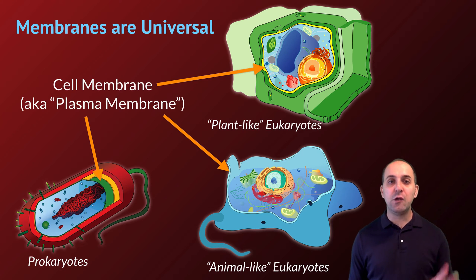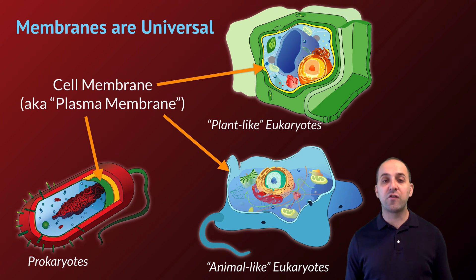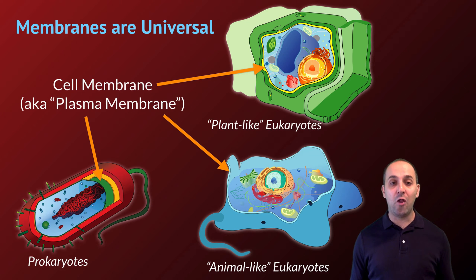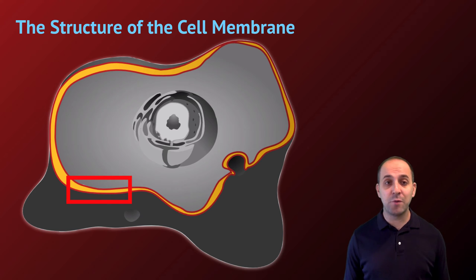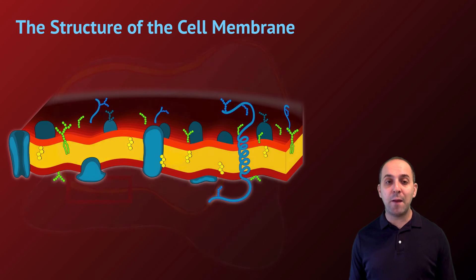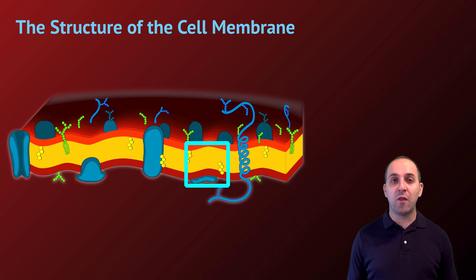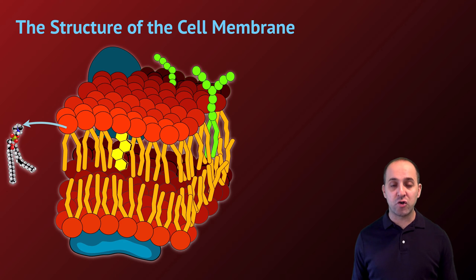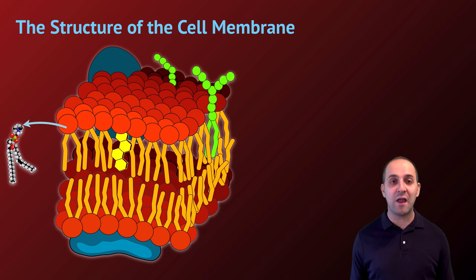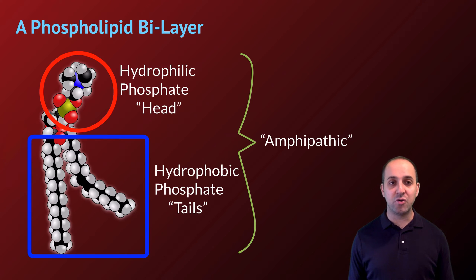Membranes are absolutely universal in living systems. All cellular systems are surrounded by cell membranes — they are a requirement for life. We first talked about membrane structure when we talked about phospholipids back in our lipid discussion, but just as a reminder, here is our cell membrane. Let's enlarge it further, and we can see a structure that looks like this. We're now going to go in and talk in detail about each of the elements that you see in this image.